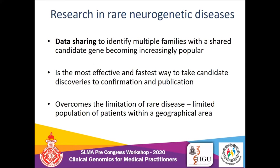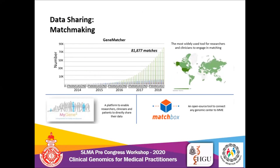One of the best options for resolving novel variants is data sharing — finding a second family with variants in the same gene and a similar phenotype. This is the fastest way to take a candidate discovery to confirmation and publication. Freely available platforms such as GeneMatcher, MyMatchbox, and MyGene2 allow researchers to share phenotypes and variants from exome sequencing data. Other researchers across the globe can identify overlapping variants or phenotypes and establish collaborations.